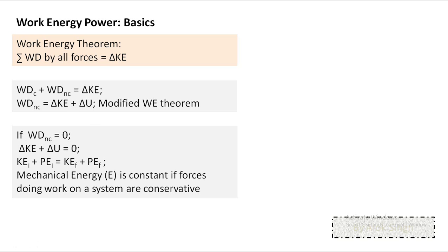So there are three related approaches, all linking work done and kinetic energy. First: work-energy theorem using work done by all forces. Second: modified form using work done by non-conservative forces equated to change in mechanical energy, accounting for potential energy from conservative forces. Third: conservation of mechanical energy, used only when work done by non-conservative forces is zero, equating initial to final mechanical energy. Depending on the situation, we use one of these three.